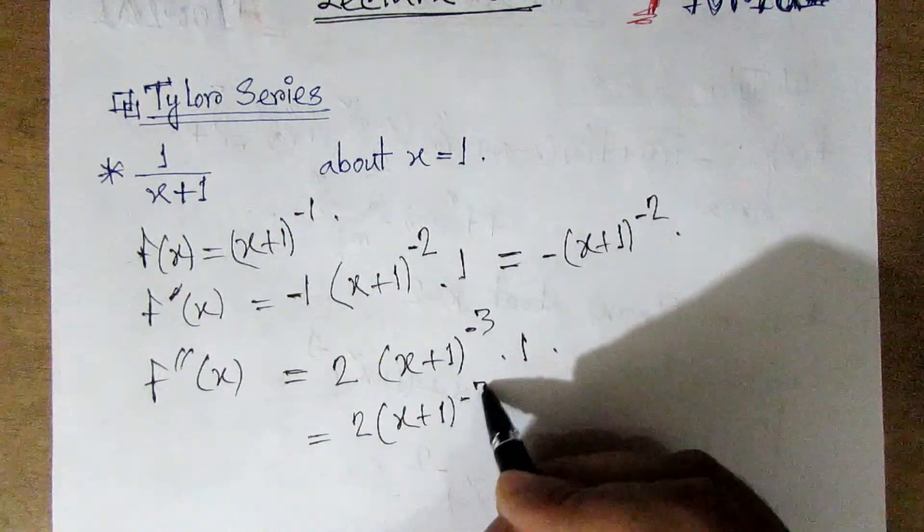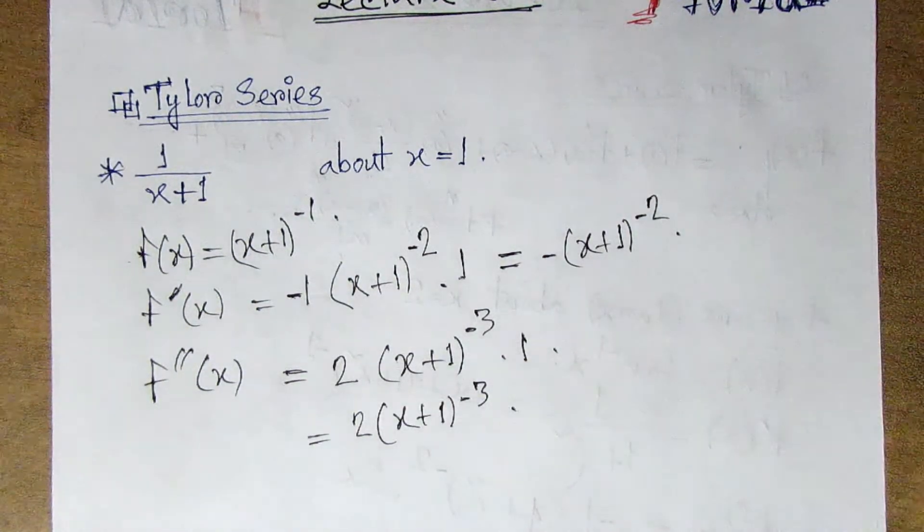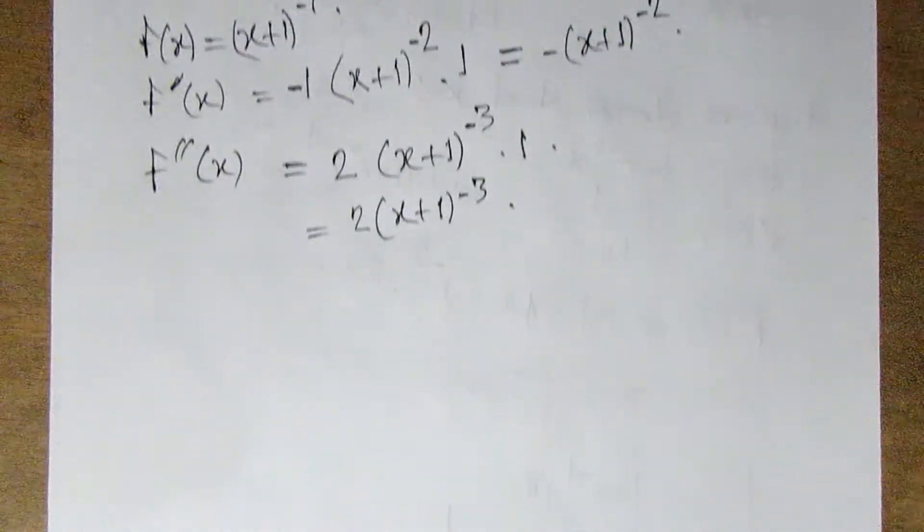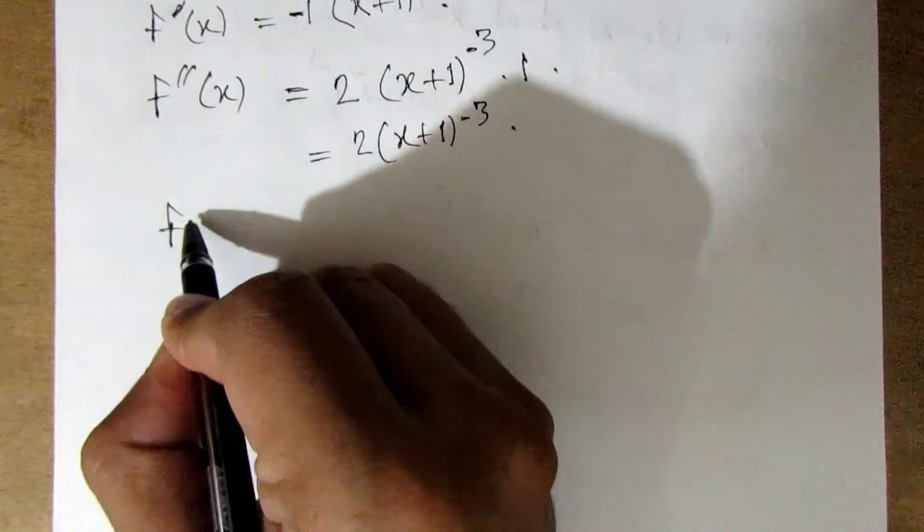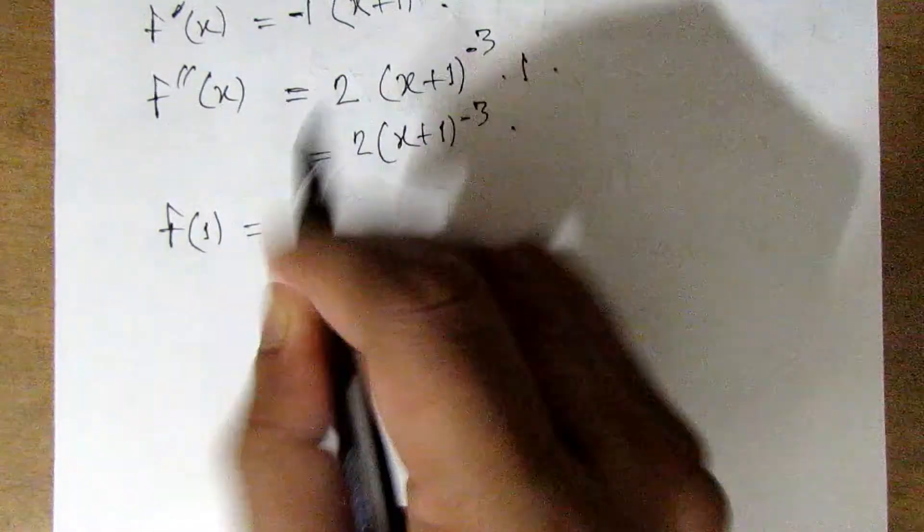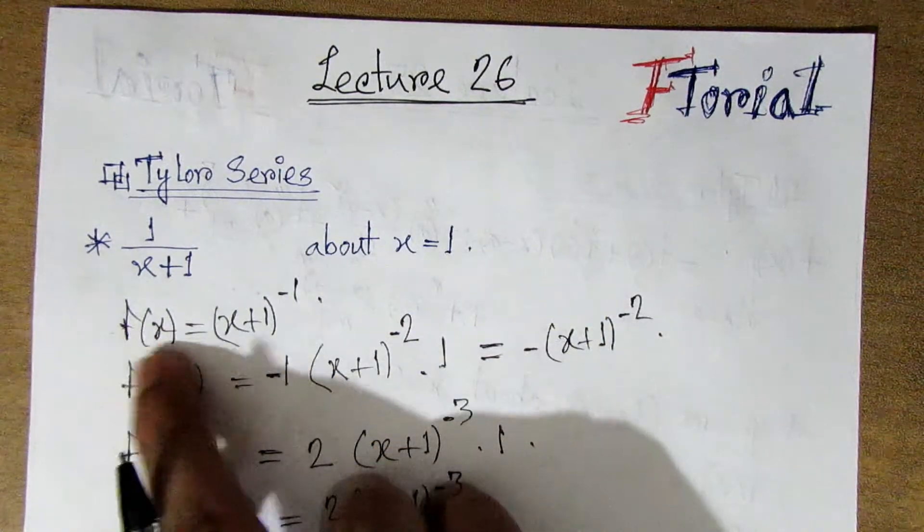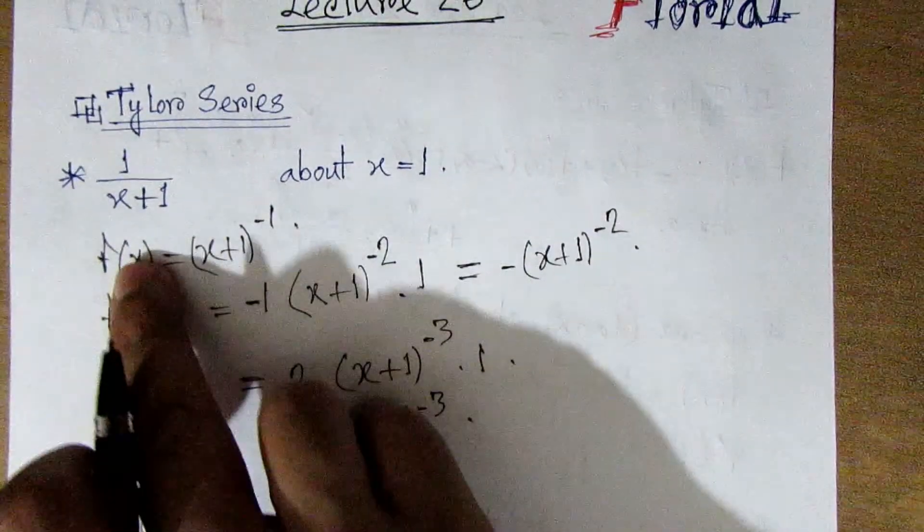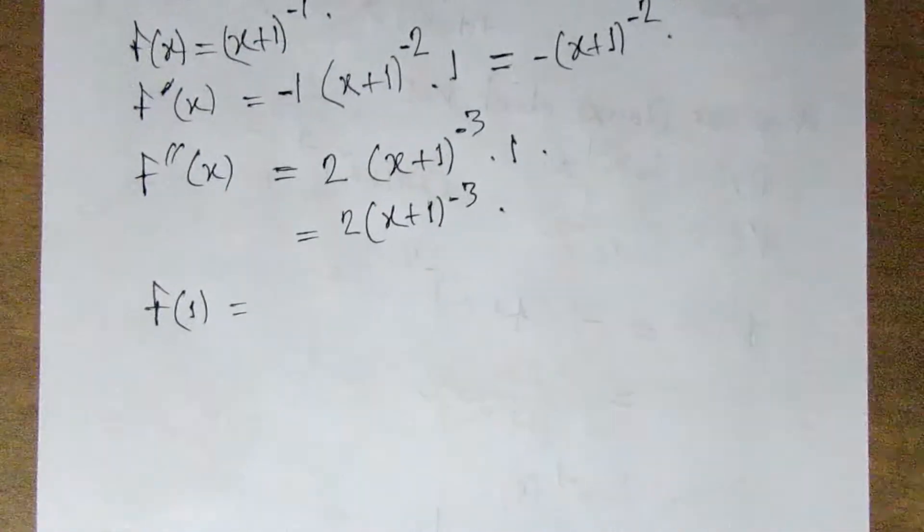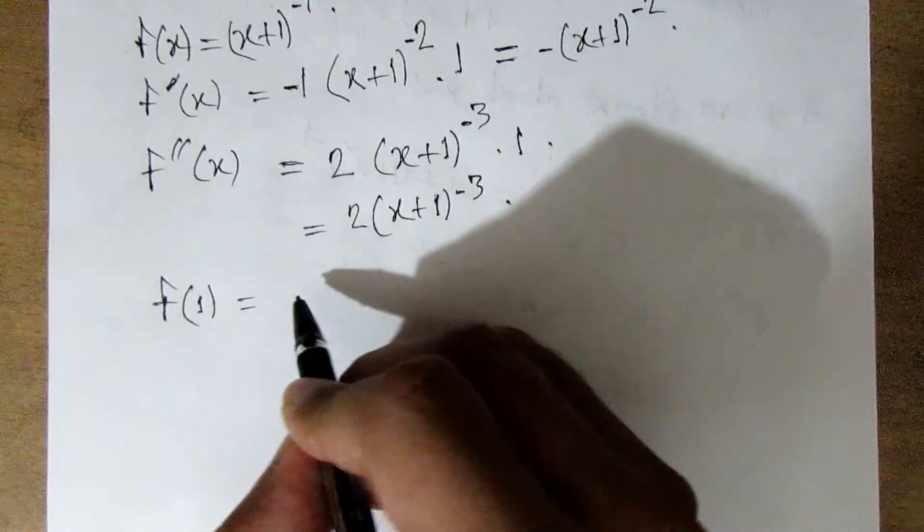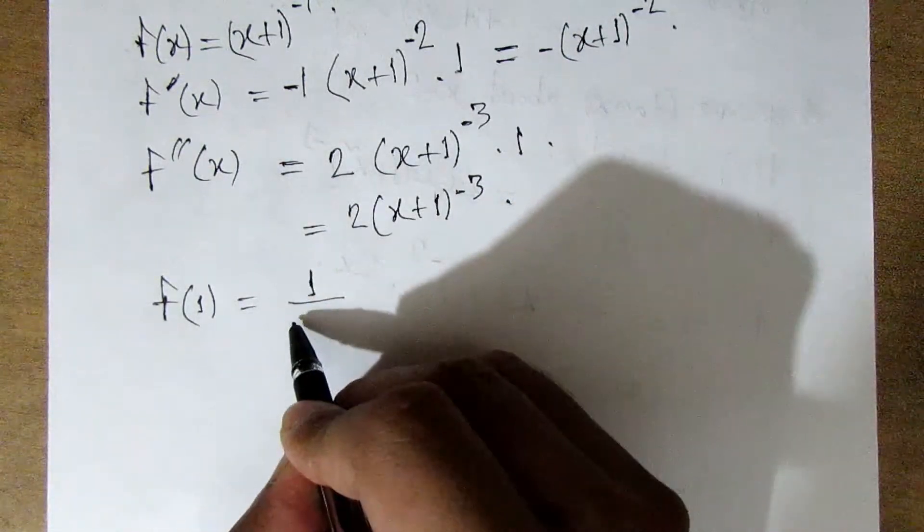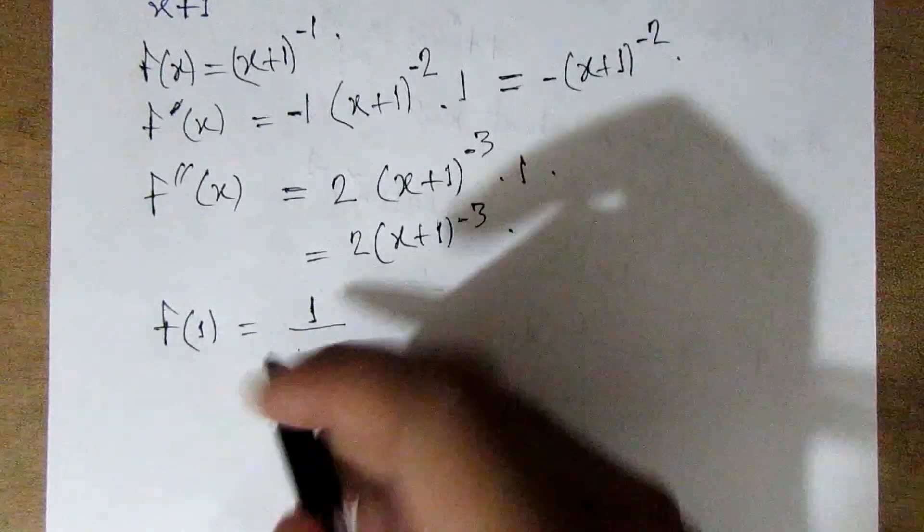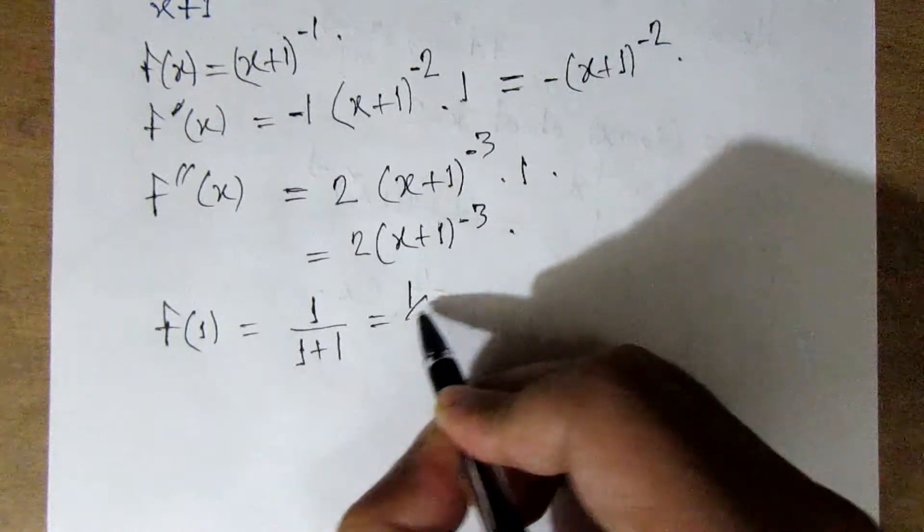At x equals 1: 1 plus 1 equals 2, so f(1) equals 1 half.